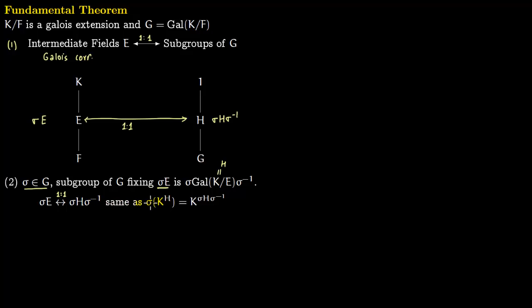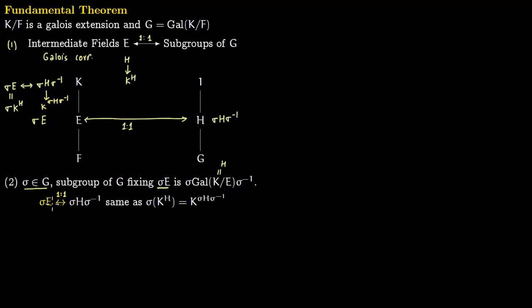This is the same as saying: the fixed field k^(σHσ⁻¹) equals σ applied to k^H. So σ(e) is in one-to-one correspondence with σHσ⁻¹, and since e corresponds to the fixed field of h, instead of σ(e) you can write σ(k^H), and correspondingly you have k^(σHσ⁻¹). Proving this is equivalent. We will use this later once we have proved the result, so let us now prove it.